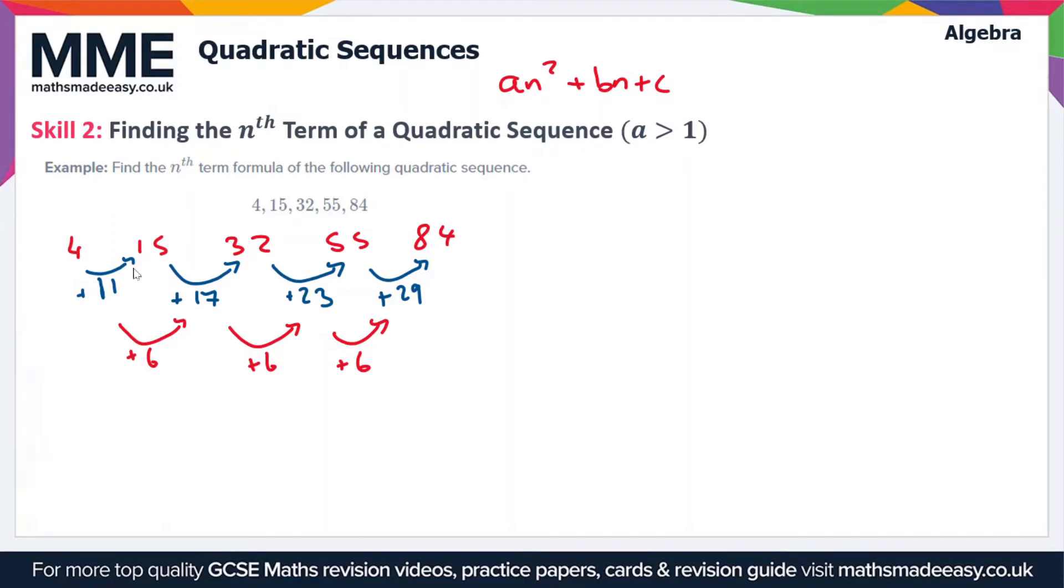So far we're following more or less the same method as we did when a was 1. Next, what we're going to do is find the value of a. So a, as before, is when we have the secondary difference, which in this case is plus 6, and we divide it by 2. So that's going to give us 3. So a is equal to 3 in this sequence.